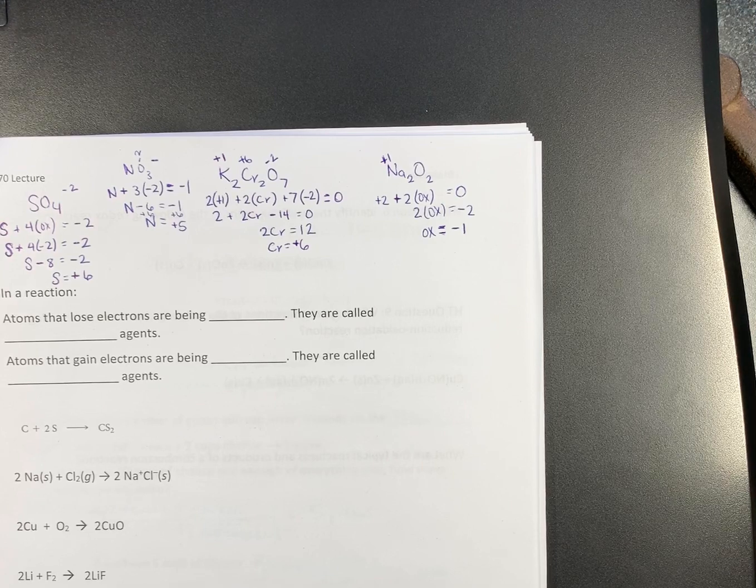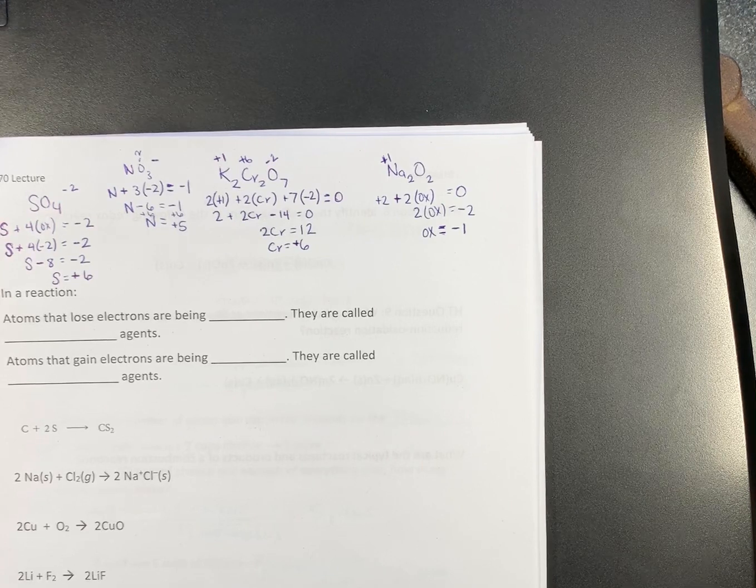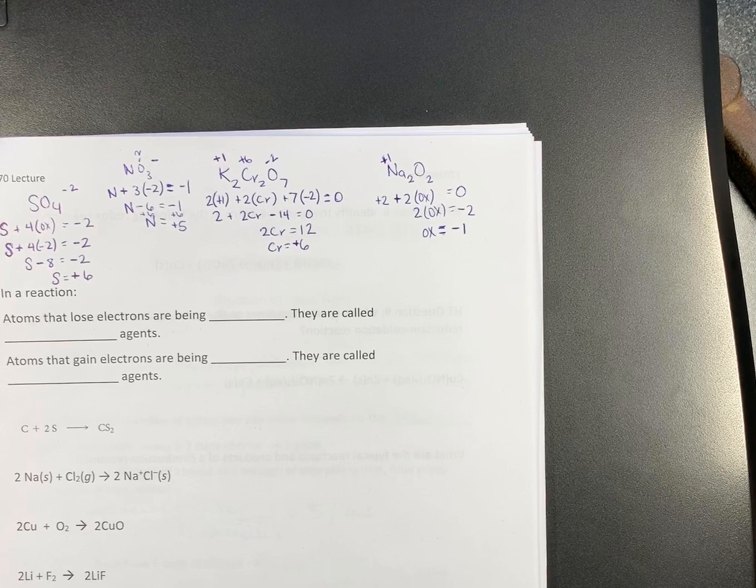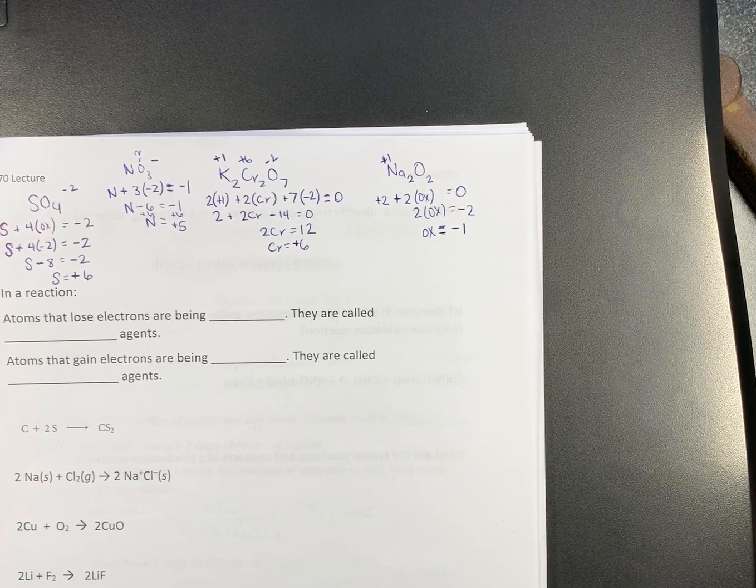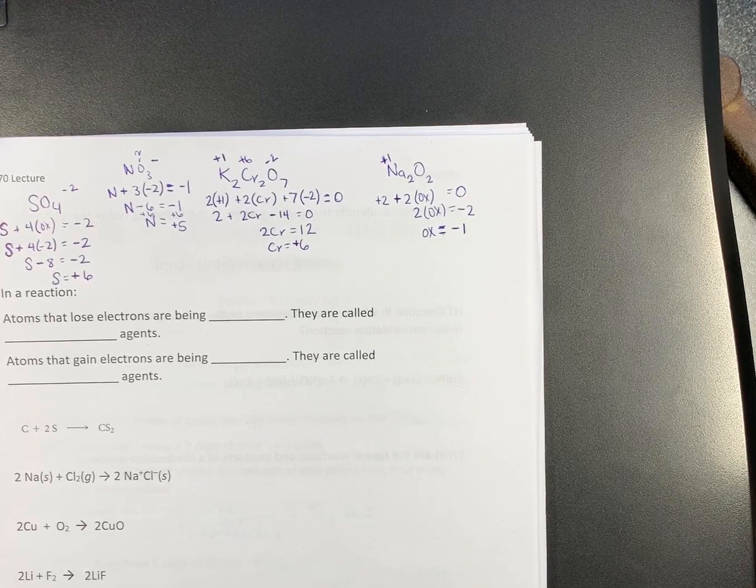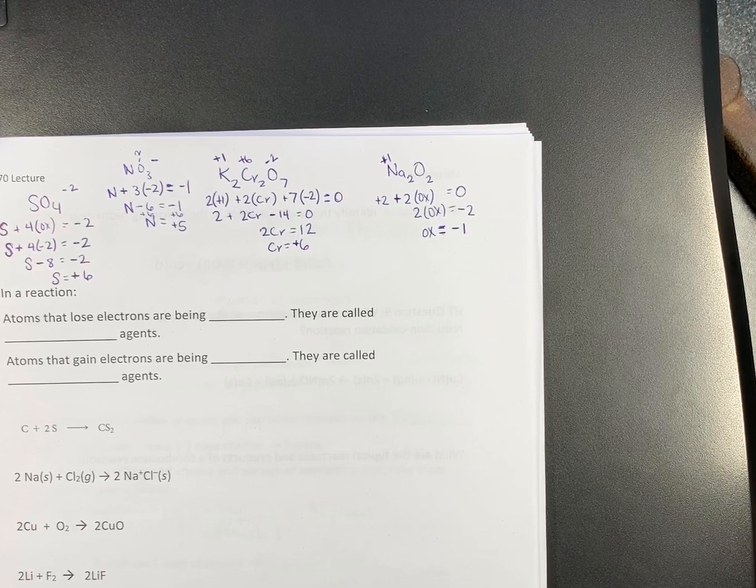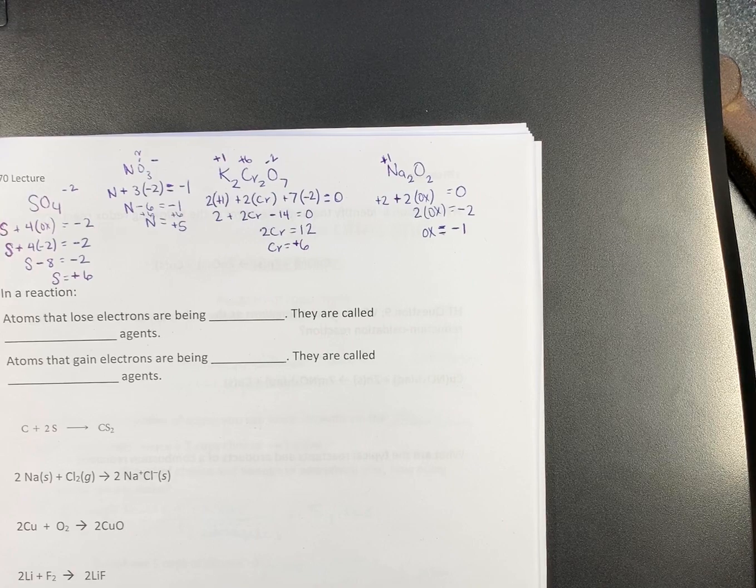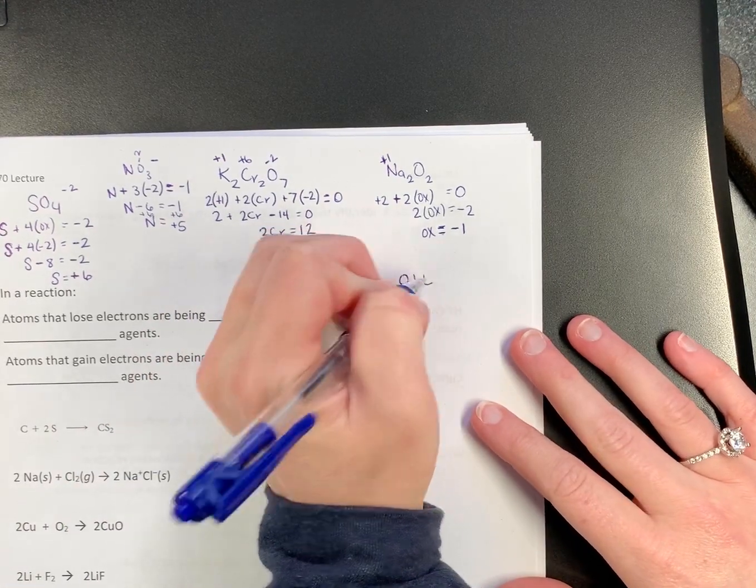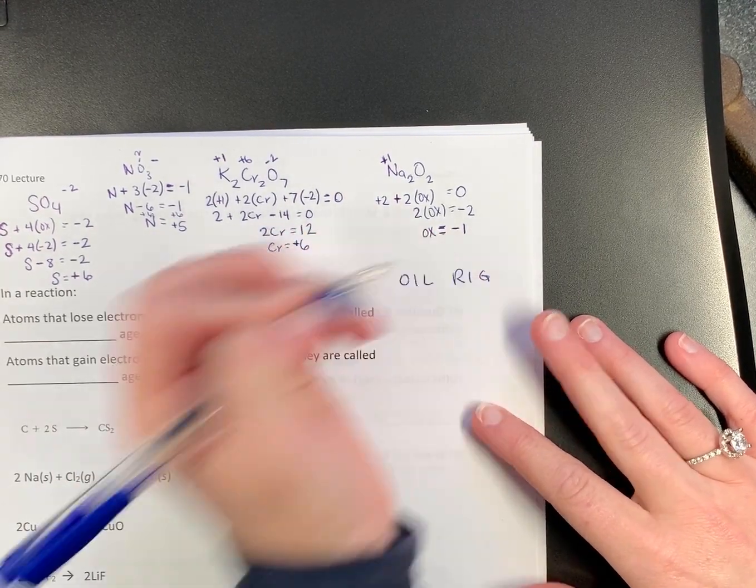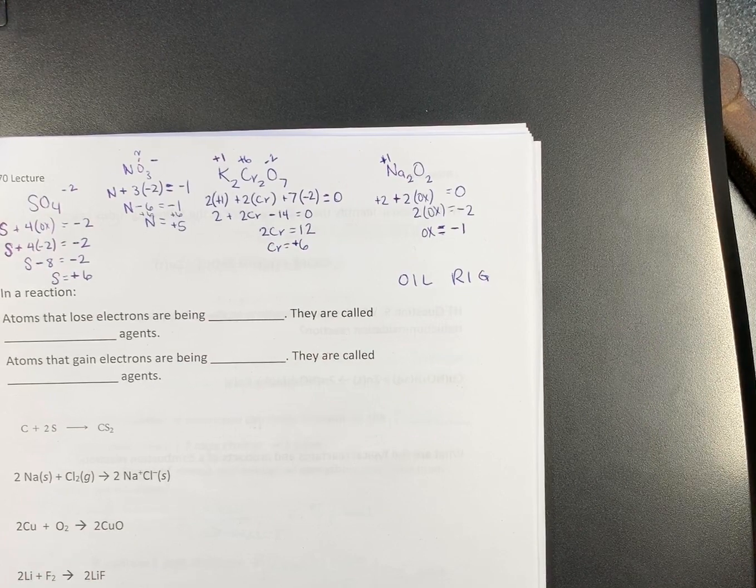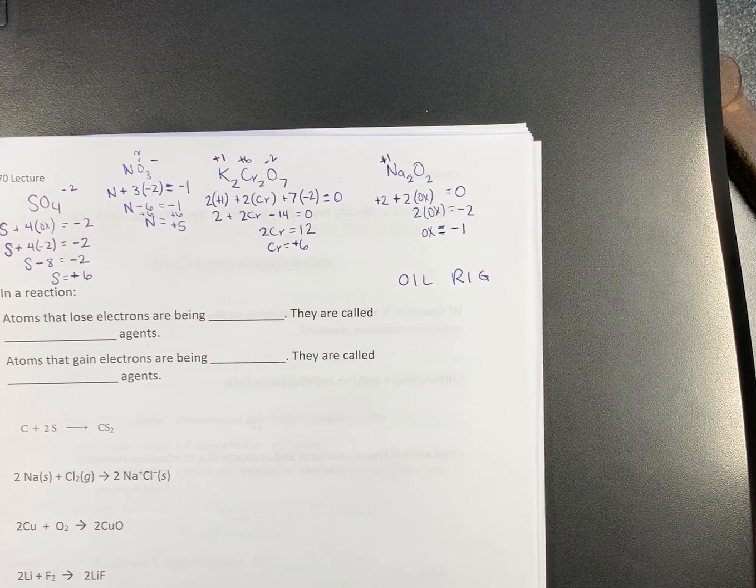Now that we can assign oxidation numbers, we need to do things in a reaction. Because oxidation and reduction aren't confusing enough. Remember, OIL RIG. Oxidation is loss. Reduction is gain.